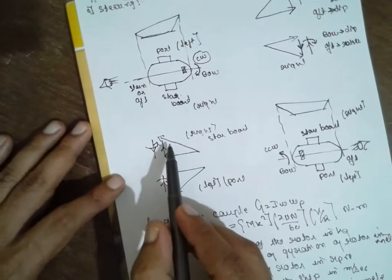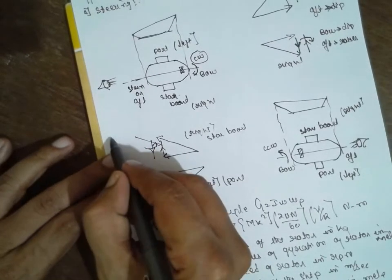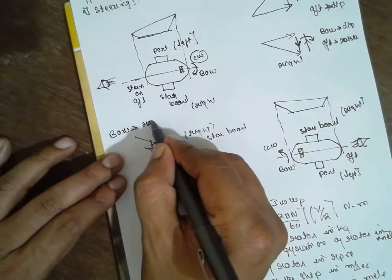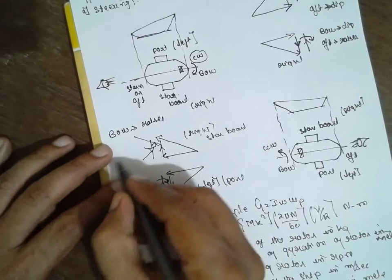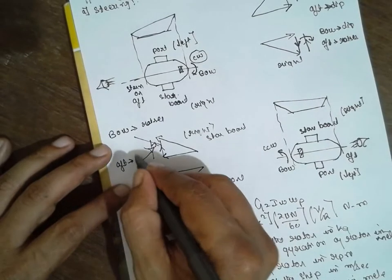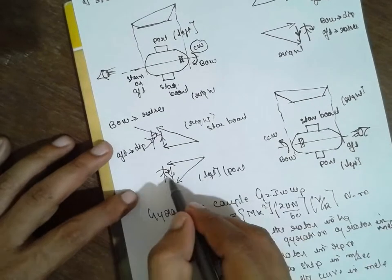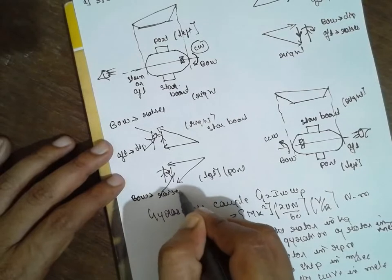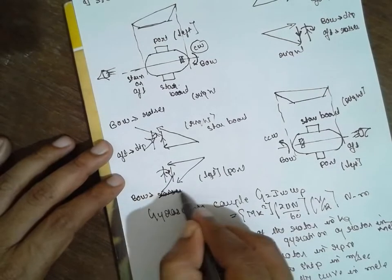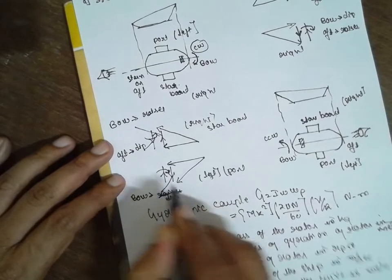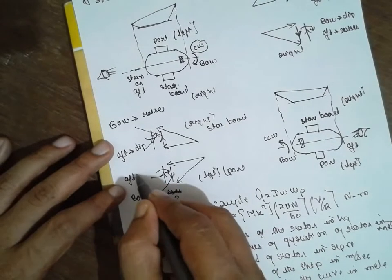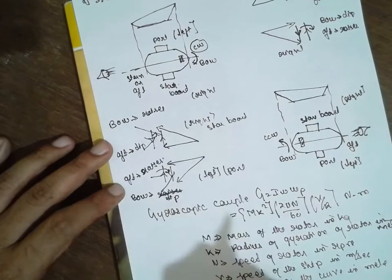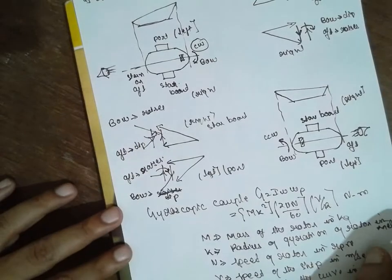After completing the analysis, based on the direction the bow will dip and aft will rise. That is the basic concept you have to understand about the ship. Steering is completed. Now we go for the pitching.